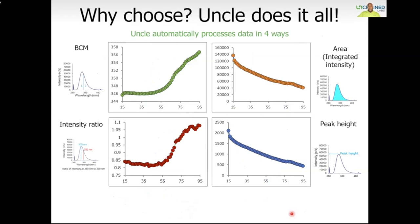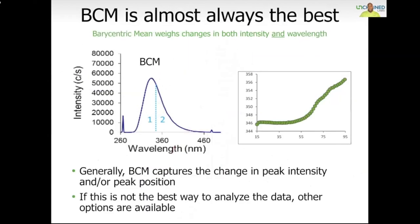What we are viewing here is the exact same dataset automatically processed in four ways. UNCLE gives you options — this approach leverages the full spectral range to get as much information as possible, allowing you to adapt to various types of proteins or formulations. A special word must be said for the barycentric mean analysis method. It combines the benefits of methods sensitive to changes in fluorescence intensity but also changes in wavelength, allowing for a data-dense and smooth denaturation curve. The output of the BCM is a center-weighted mean wavelength of the emission. Unlike other methods only suitable for some proteins, this method works for the majority of proteins, and is therefore the default method on the UNCLE platform. Users can easily toggle to the other methods generated in parallel.